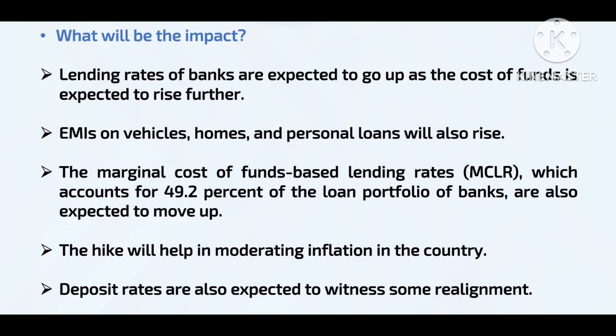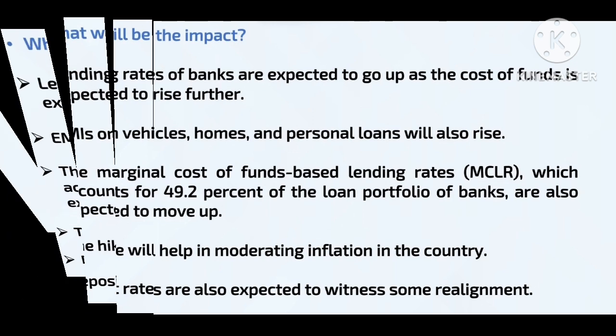The lending rates will increase to around 9.2% in terms of loan portfolio. When lending becomes more expensive, people take fewer loans and have less money to spend, which helps bring inflation down to a moderate level. Even for essentials like wheat where there was a crisis, this tool is used by RBI to moderate inflation by increasing the repo rate and reducing lending activity.